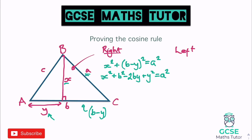Now using Pythagoras on the left triangle to find c²: the two shorter sides are x and y, so c² = x² + y². Rearranging this gives x² = c² − y². I now have x² expressed without x, and x² also appears in the a² equation, so I can substitute.